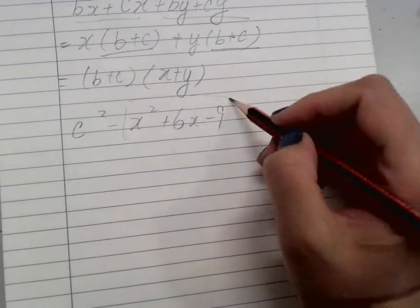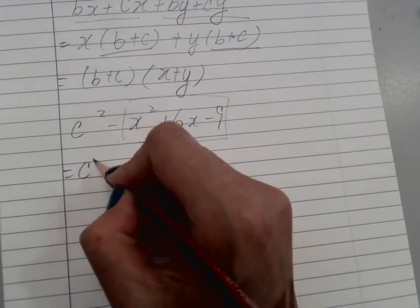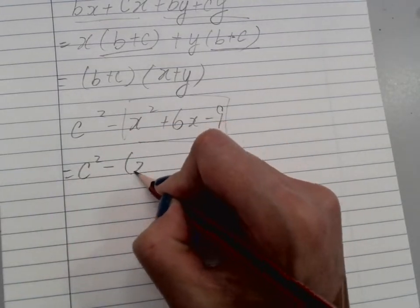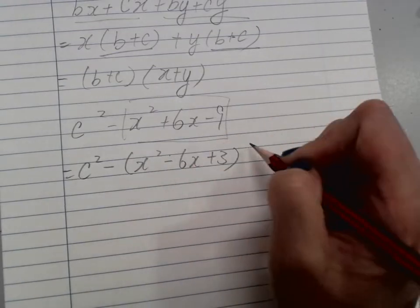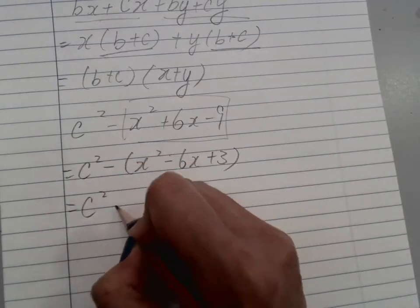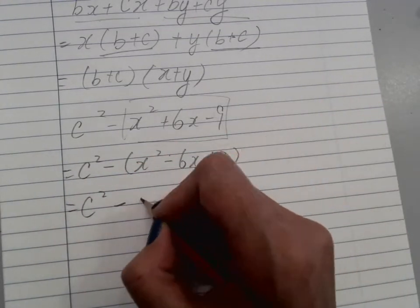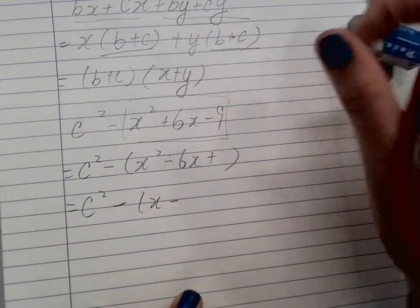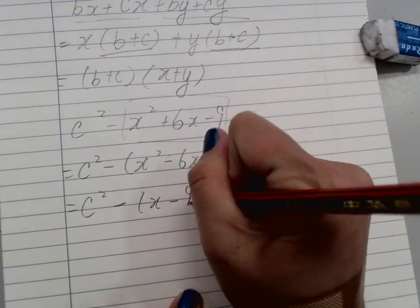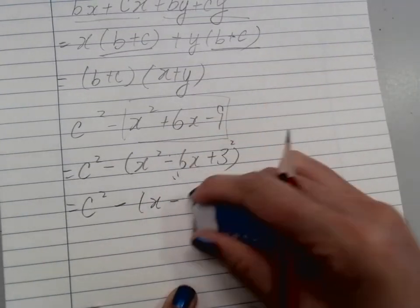Alright, so I can see here this is a difference of two squares. So I have c squared minus bracket x squared minus 6x plus 3. This is a difference of two squares... no wait, this is completing the square here. So I have x minus 9, x minus 3 all squared.